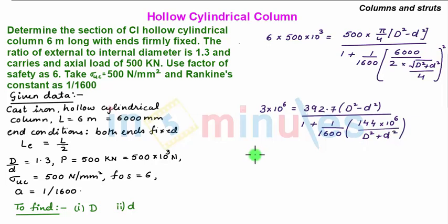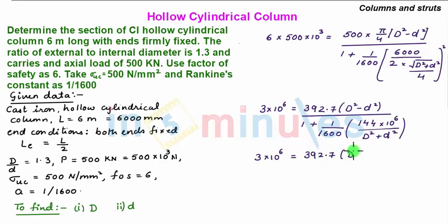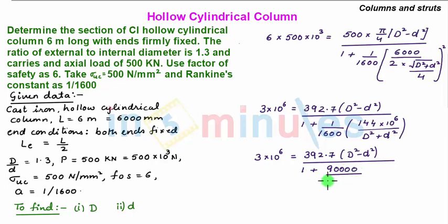Upon solving this, we get 3 into 10 to the power 6 is equal to 392.7 into capital D square minus small d square, the whole upon 1 plus 90000 upon capital D square plus small d square.